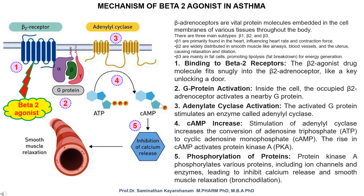Step 5: phosphorylation of proteins. Protein kinase A phosphorylates various proteins including ion channels and enzymes, leading to inhibited calcium release and smooth muscle relaxation — bronchodilation.